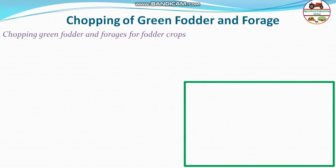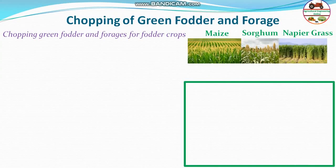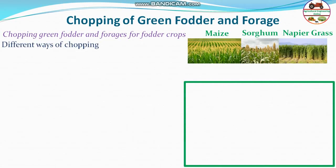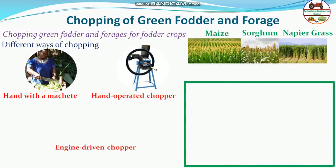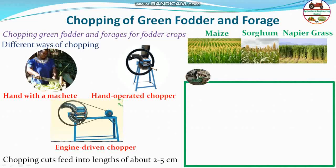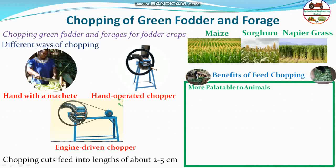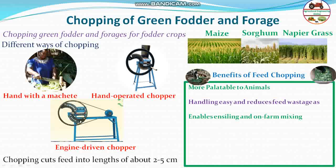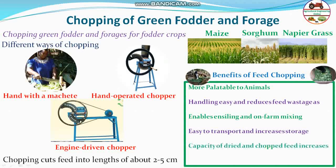Coming to the chopping of green fodder and forage: fodder crops include maize crop, sorghum crop, and napier grass — these are three cultivated crops used for green fodder and forage for cattle or domestic animals. Other natural grasses can also be fed to animals. Different ways of chopping include: by hand with a machete, hand-operated chopper, and engine-driven chopper. Benefits of feed chopping include: more palatable to animals, easier handling, reduces feed wastage, enables ensiling and on-farm mixing, easy to transport, increases storage capacity, and improves marketability so farmers can earn more.